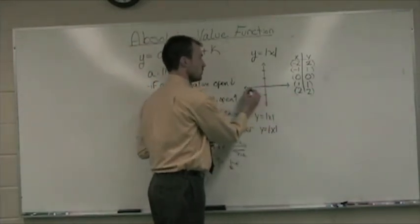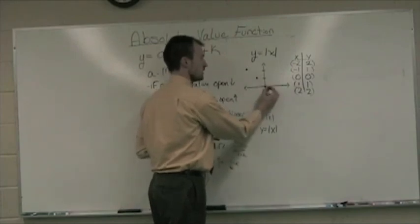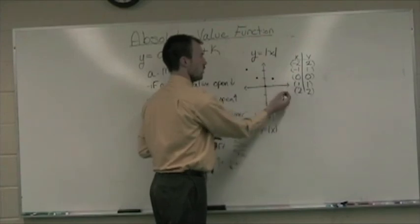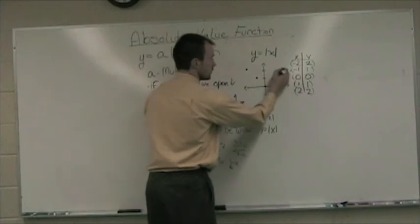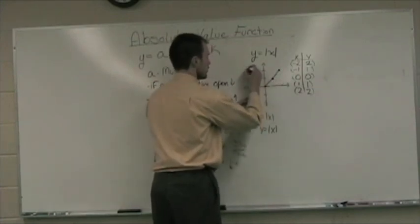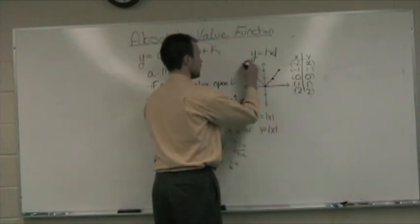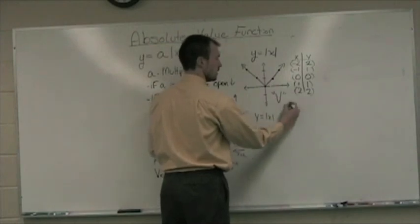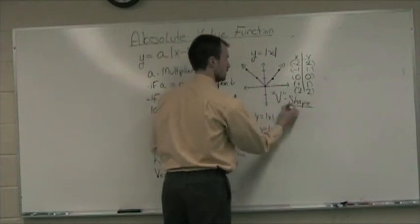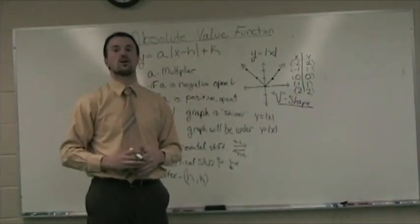Negative 2, so 2 to the left and up 2. Negative 1, positive 1. The point 0, 0. 1, 1 and 2, 2. Take and connect these. You'll notice that our graph looks like a V. And every absolute value function will look like a V.